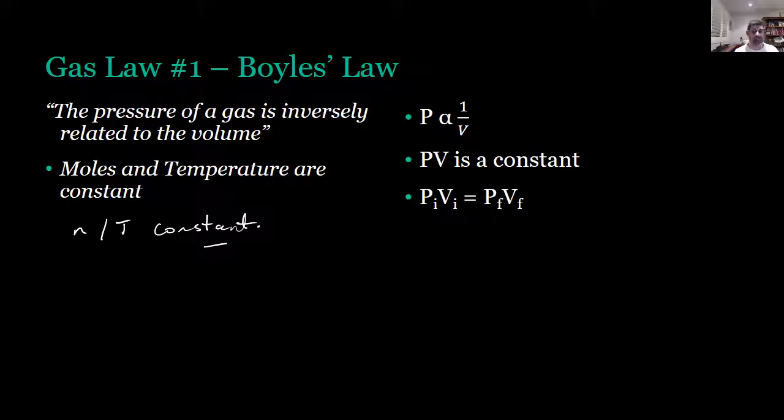This is our mathematical relationship that represents this process, and it means P times V is a constant. Or, where I is initial conditions and F is final conditions, the multiple of pressure times volume initially will be equal to the pressure times volume finally. So you can actually work out changes mathematically using this law.